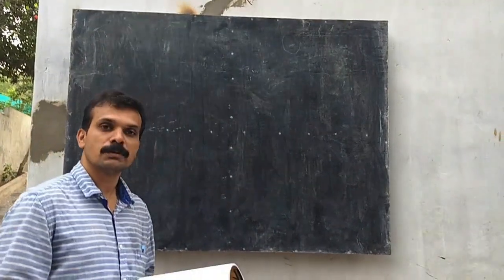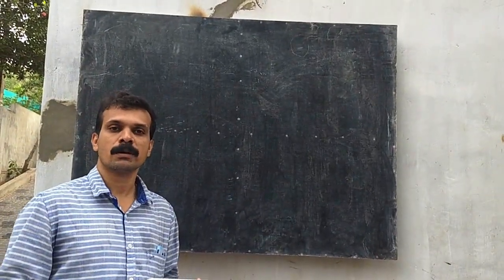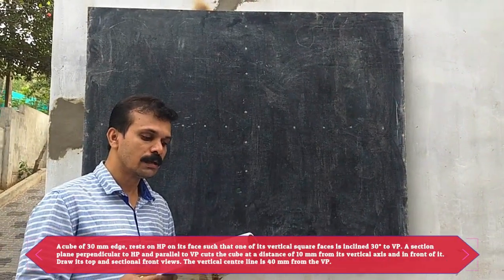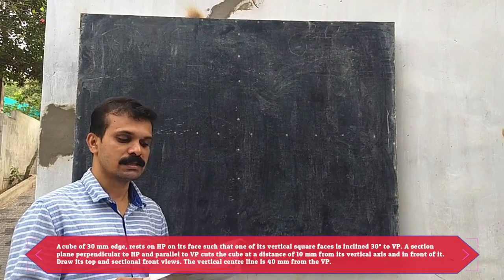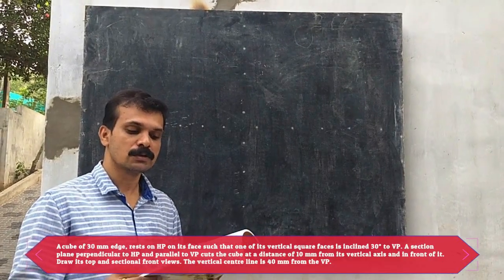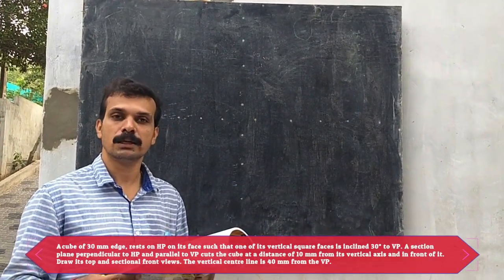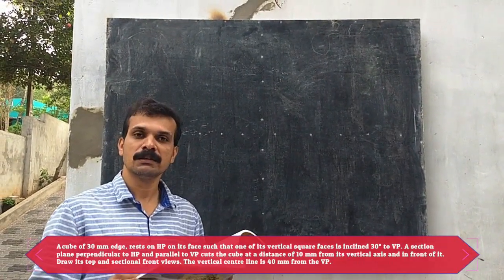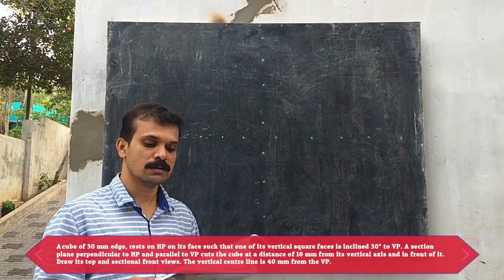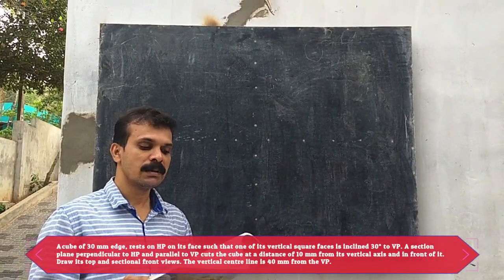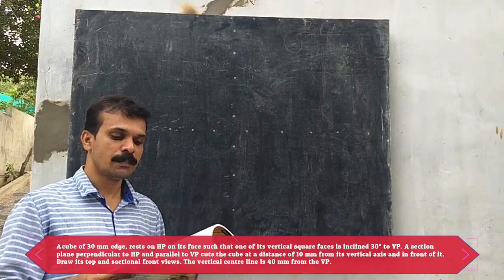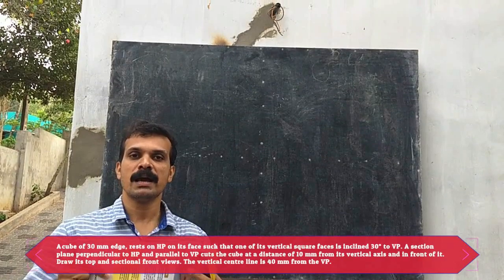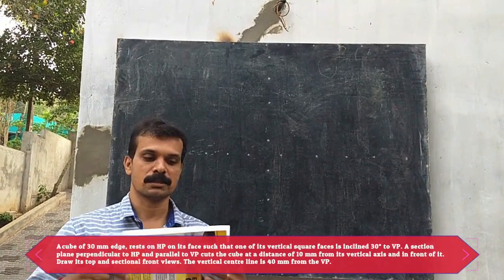Now we are moving to question number 5.3. It is a problem related to a vertical section plane. The question is: a cube of 30mm edge rests on HP on its face such that one of its vertical square faces is inclined at 30 degrees to VP. A section plane perpendicular to HP and parallel to VP — that is a vertical section plane.